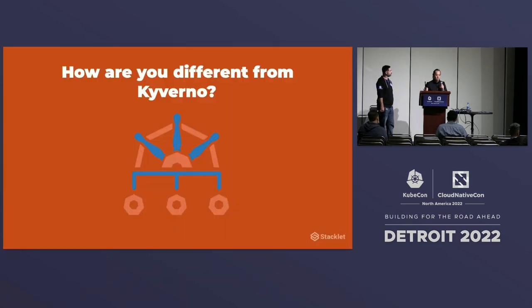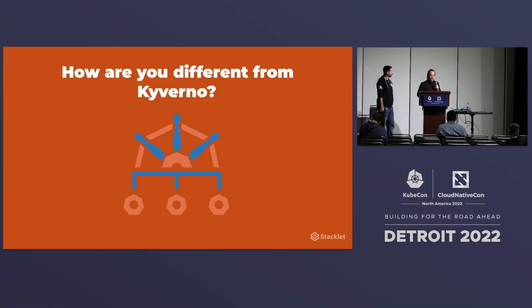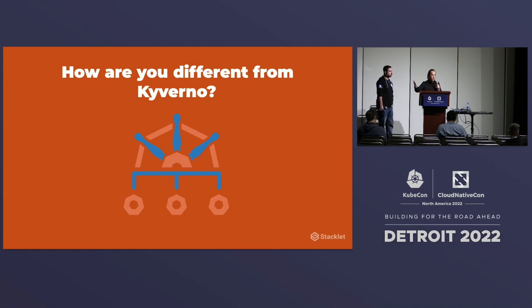The next question is how are you different from Kyverno? Kyverno is great — it's built natively for Kubernetes and has a lot of power in that space. But if you're looking for a single tool to manage the cloud, Kubernetes, and Terraform, Kyverno doesn't really do that. Custodian is really the only one touching the entire stack — from infrastructure as code all the way to the cloud to the cluster.